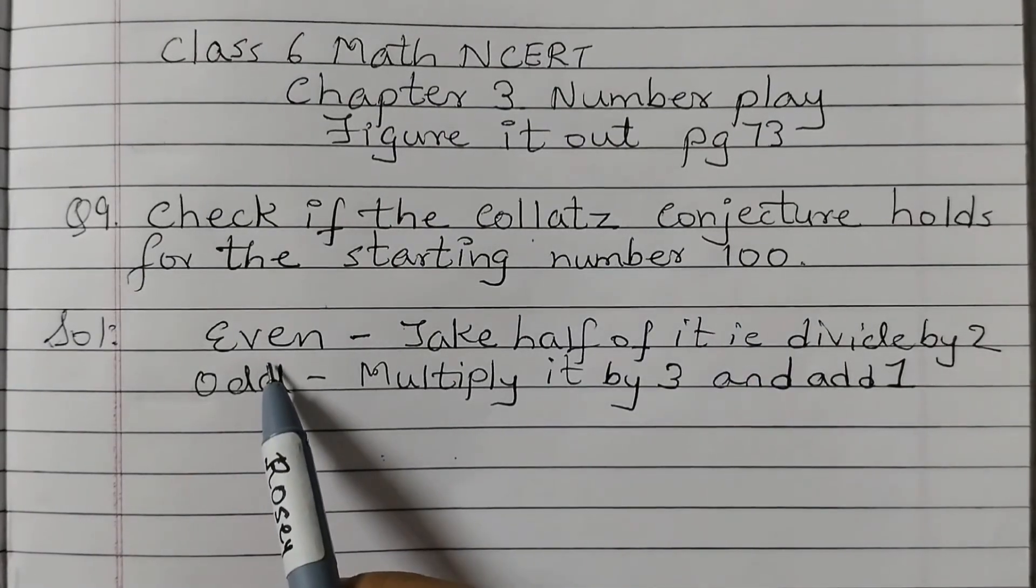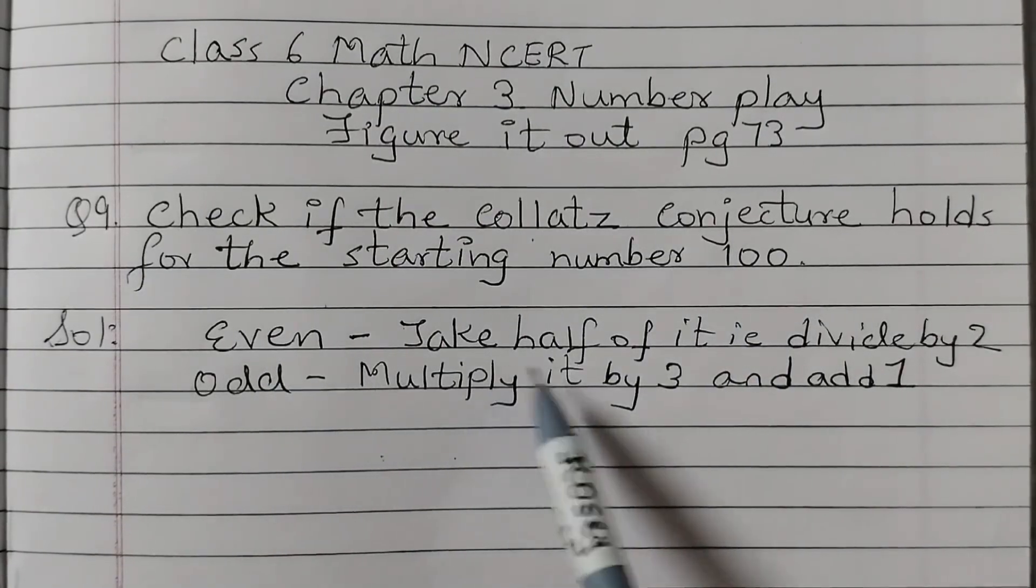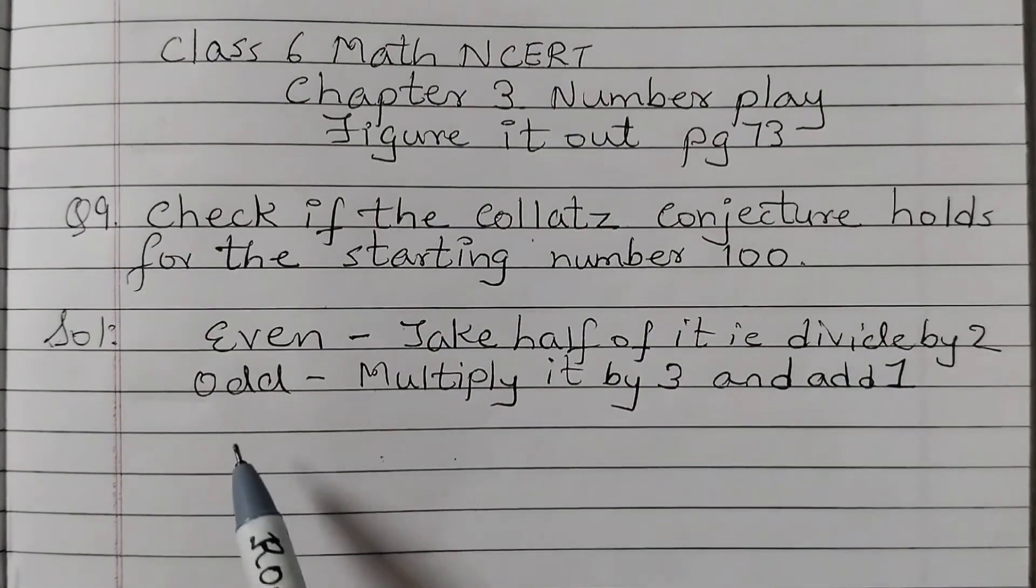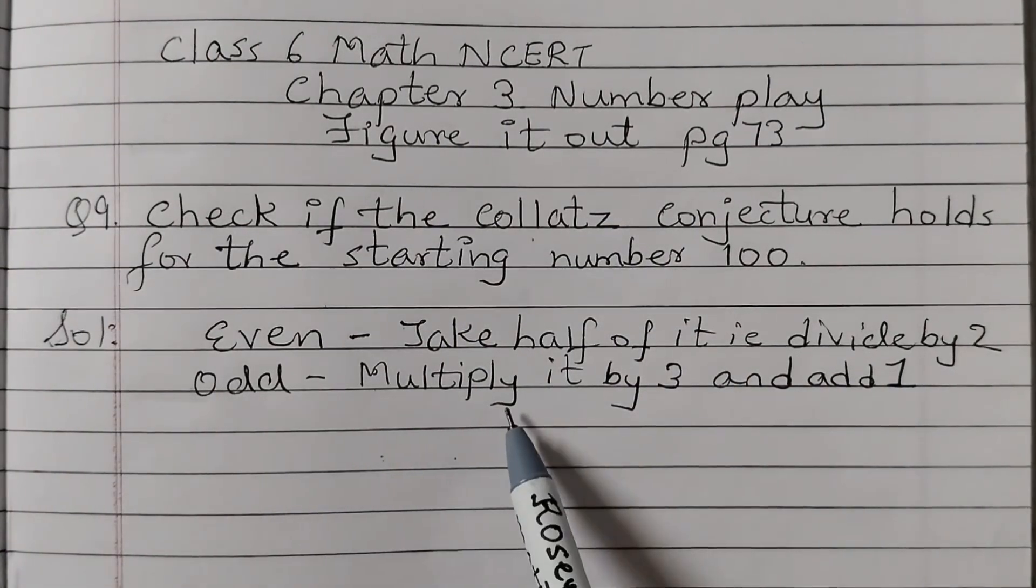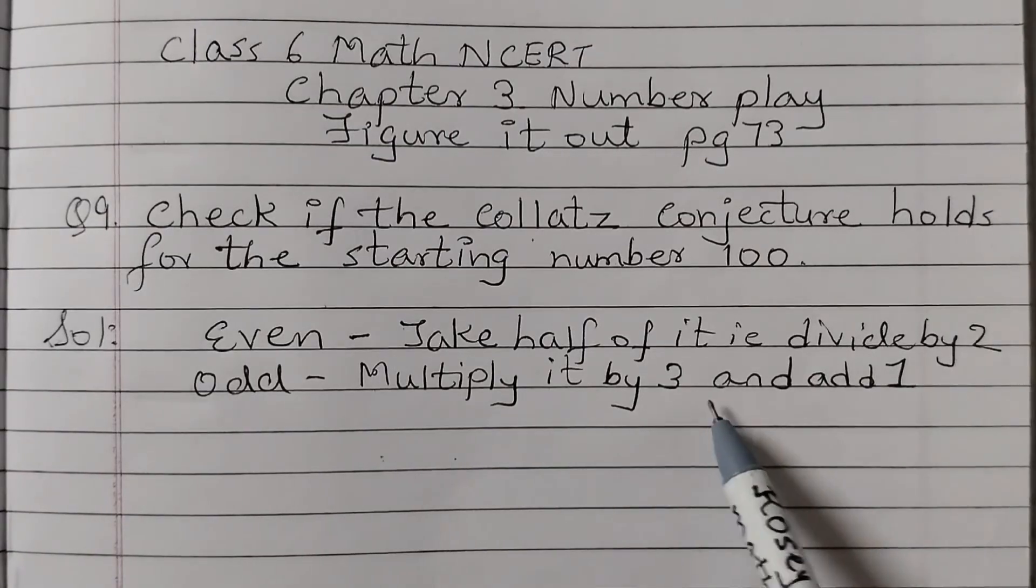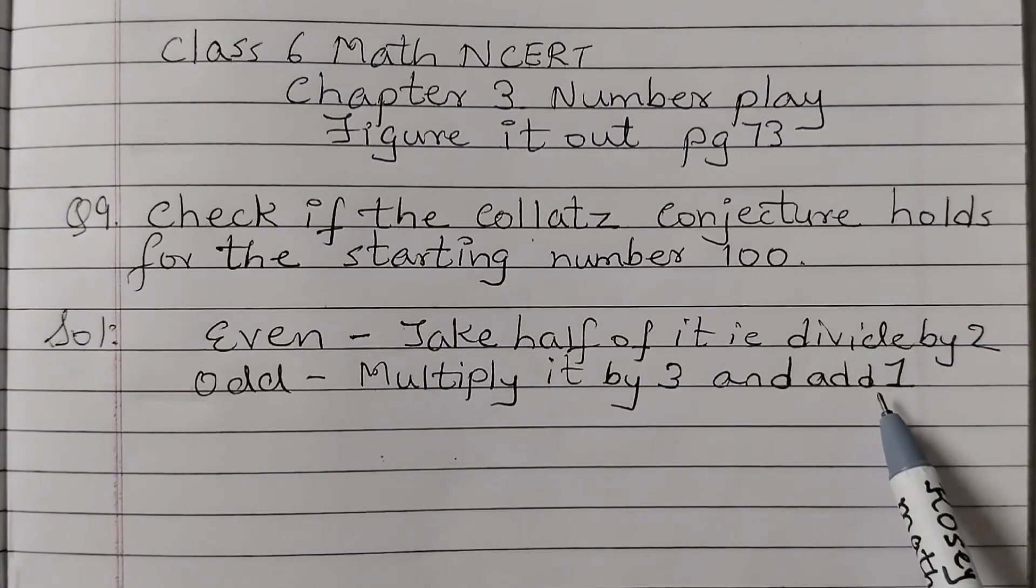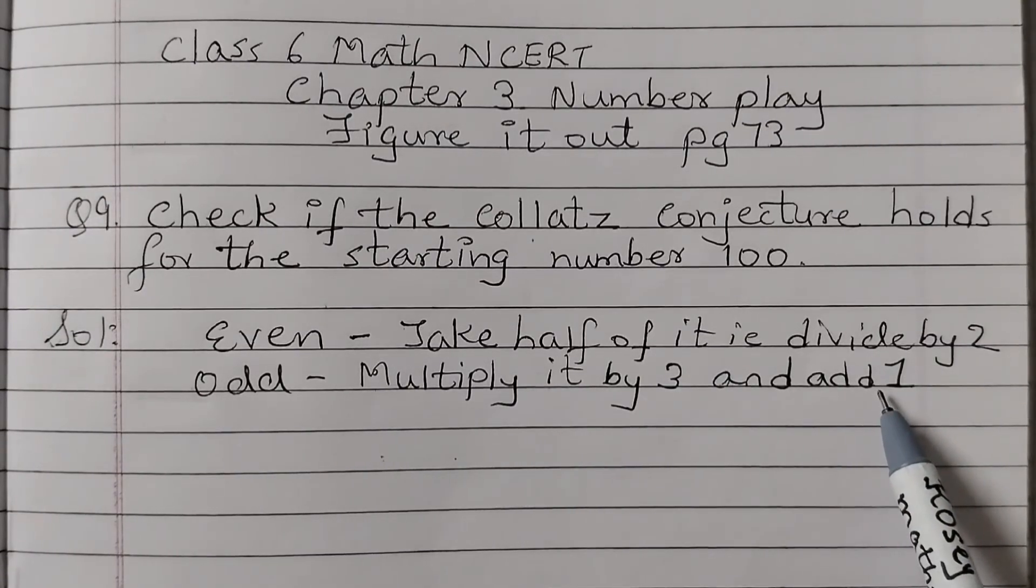So the rules are if it's an even number then you have to take half of it, that means divide it by 2. If it's an odd number you need to multiply the number by 3 and then add 1. And you need to continue these steps till you get the number 1.